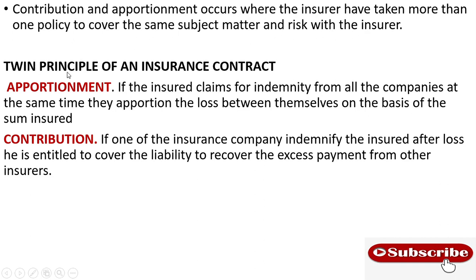Apportionment is one of the twin principles of an insurance contract. It occurs if the insured claims for indemnity from all the insurance companies at the same time; they apportion the loss between themselves on the basis of the sum insured.